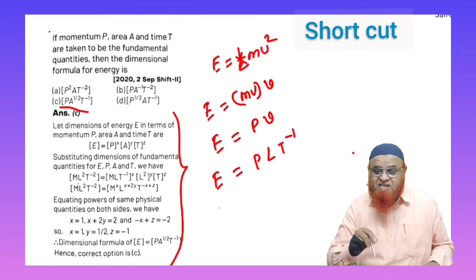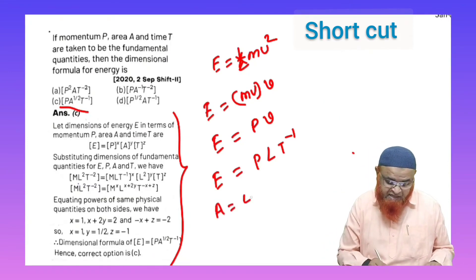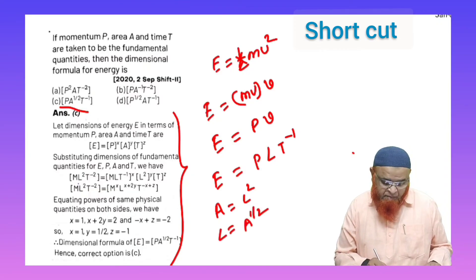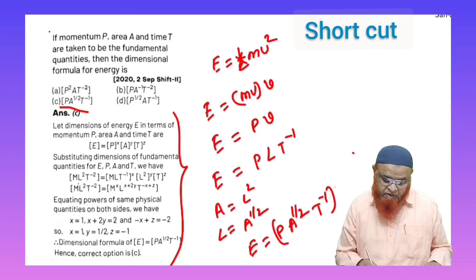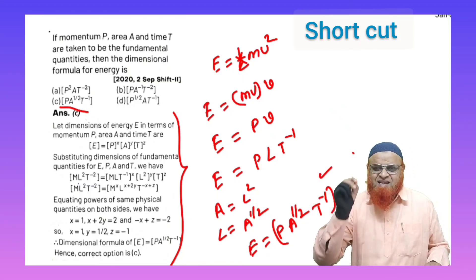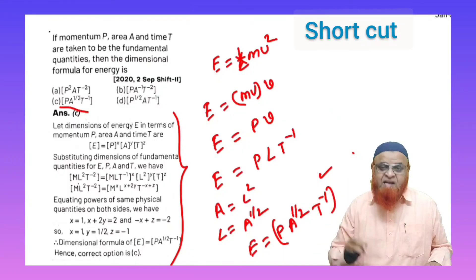You all know area means l square, so can you write l means a power of 1 by 2? That's it. You can write E as p times a to the power of 1 by 2 times t to the power of minus 1. So this is the simple strategy and easy lazy method. Thank you very much.